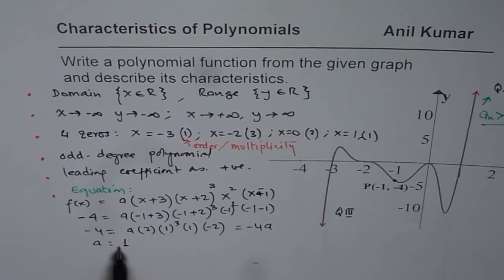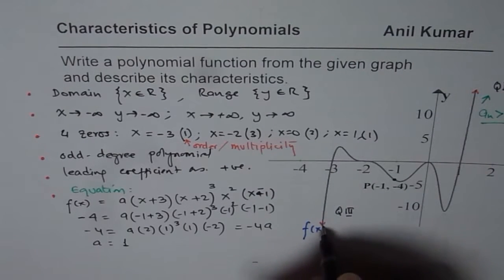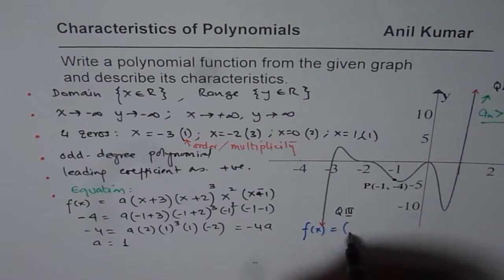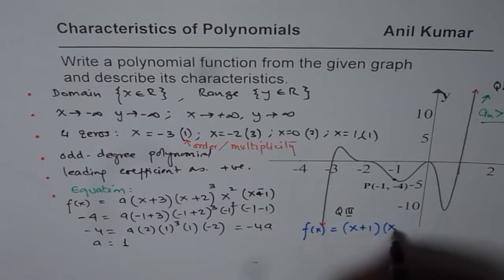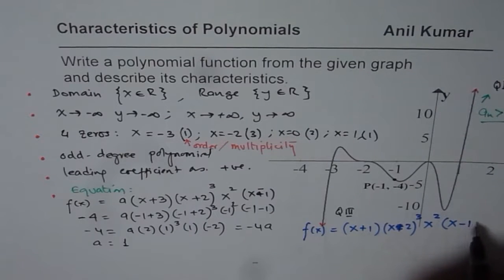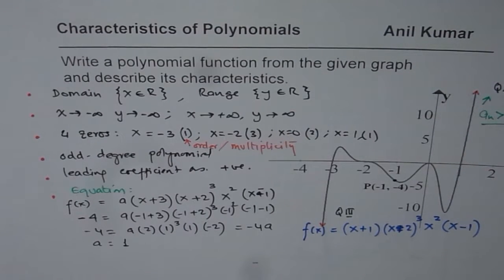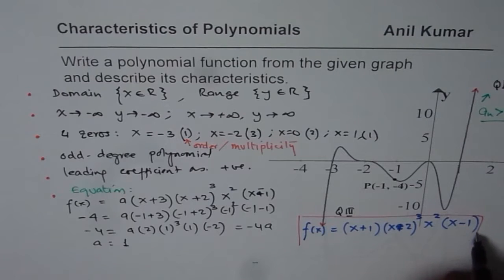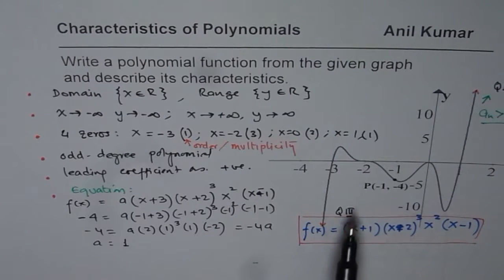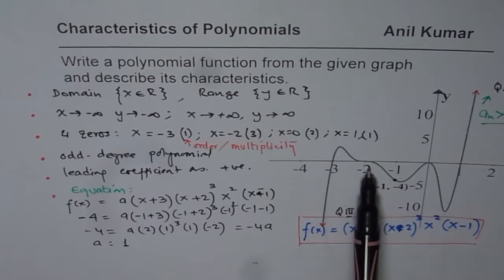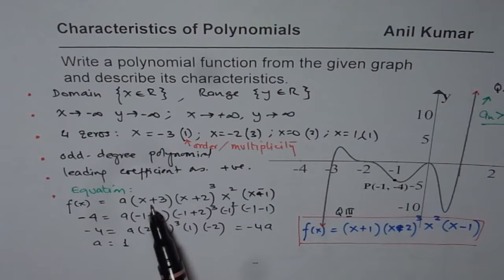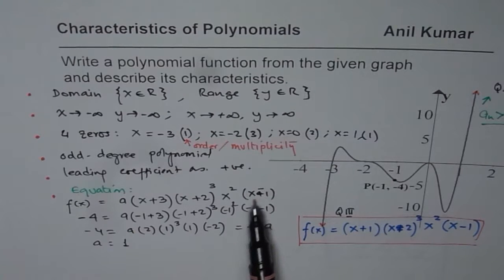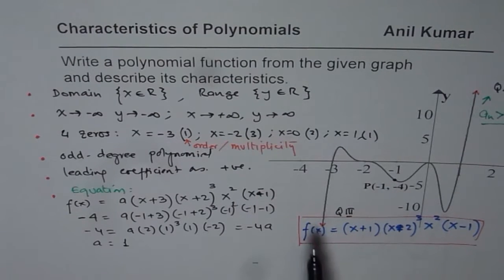Correct. Since a is 1, we can now write down our equation of this function. This is 1 for us, x plus 3 times x plus 2 whole cube, x squared times x minus 1. Correct. So, that becomes the equation for the given function. I hope you understand and appreciate how we got the equation from the graph. So, look into the zeros and their multiplicity to write down a general factored form of the equation and find the value of a using a given point.